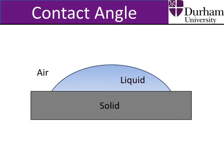The contact angle of a droplet is measured by taking the points on the droplet that are simultaneously in contact with the solid, liquid and air, and drawing a tangent to the droplet curve at these points. The contact angle is then the angle between this tangent and the solid surface.